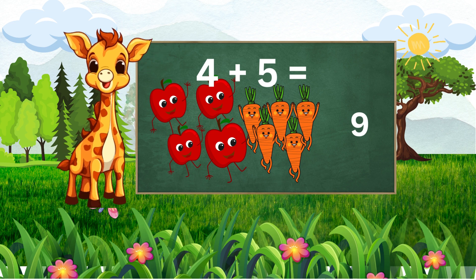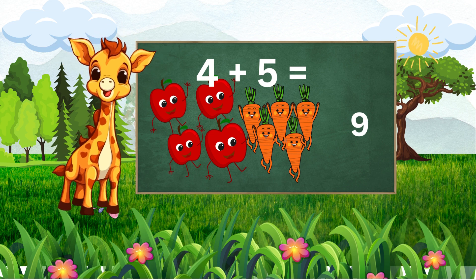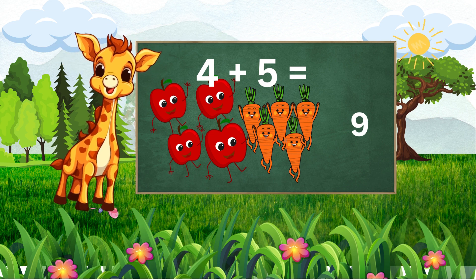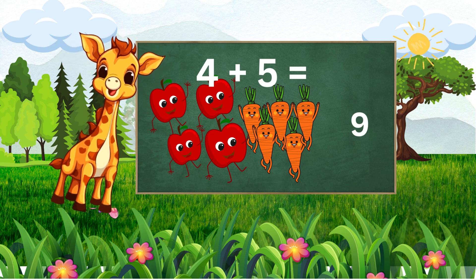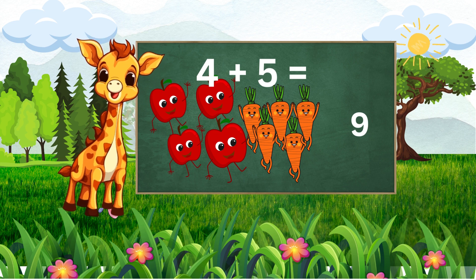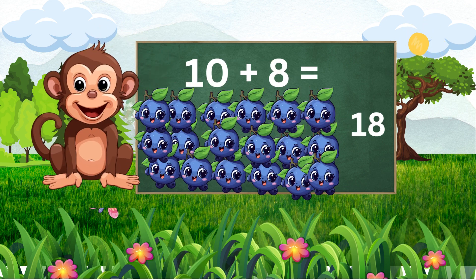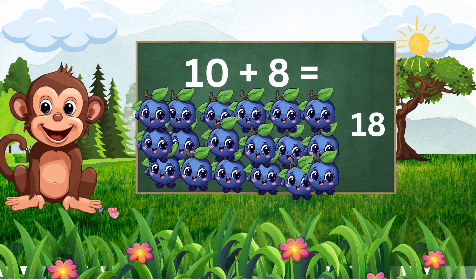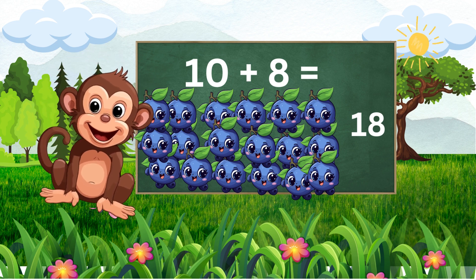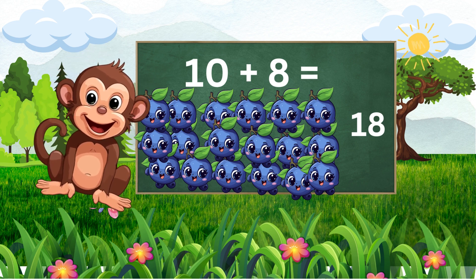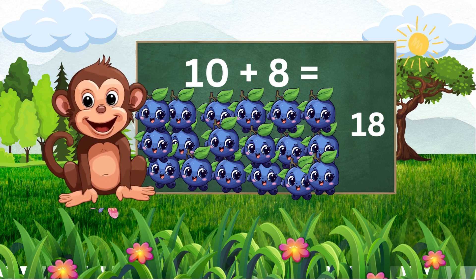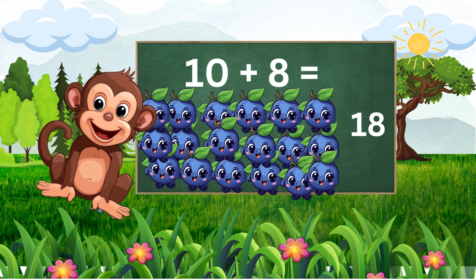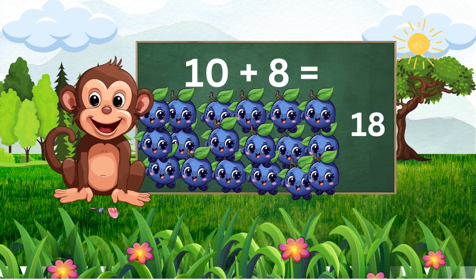Let's try one more. If we have ten blueberries plus eight blueberries, how many fruit do we have in total? I know this one — we have 18 blueberries. Well done, monkey. Ten blueberries plus eight blueberries equals 18 blueberries.